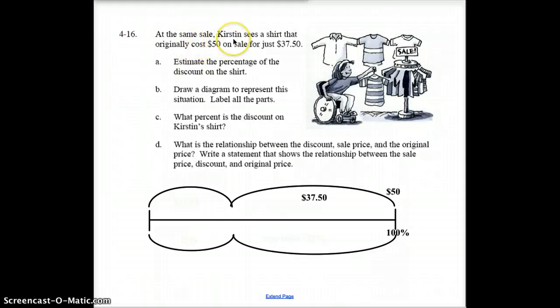At the same sale, Kirsten sees a shirt that originally cost $50 and now it's on sale for $37.50. So the original cost is $50, which is, by the way, the 100%. It's on sale for $37.50. I wonder how much percentage she saved. You might notice this, again, looks like a proportion. So 50 over 100 is the same as $37.50 over some smaller number. So let's figure out how we can do that. $37.50 times 100 divided by 50 should equal some number.